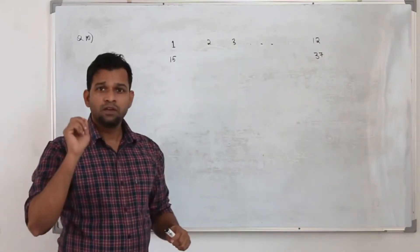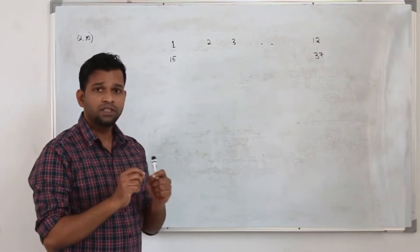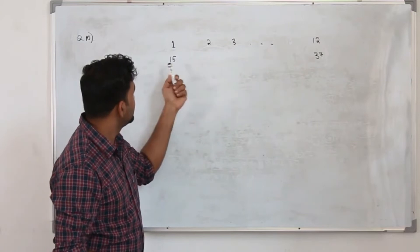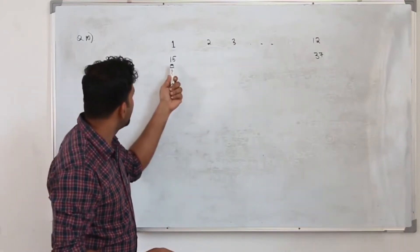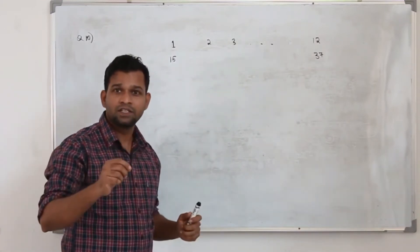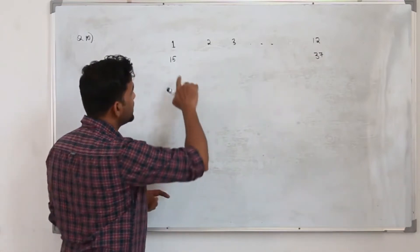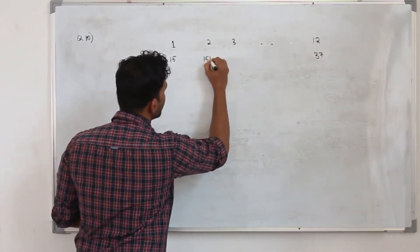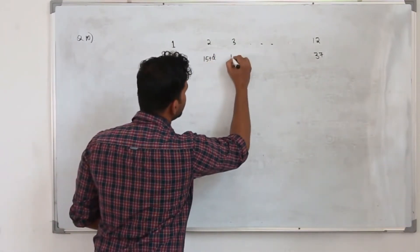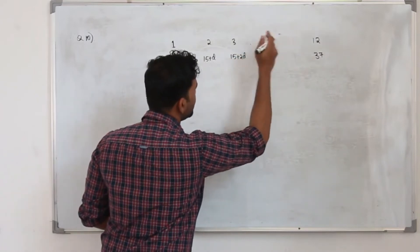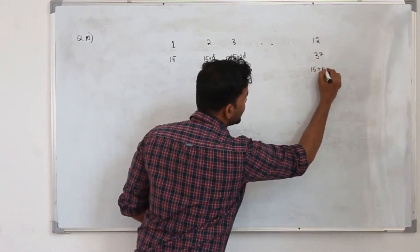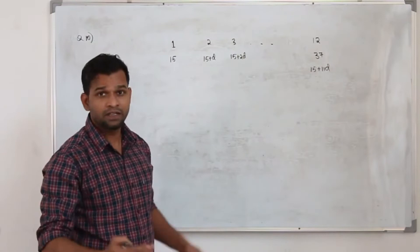Looking at part A, in training plan A every Sunday he increases his distance. In week 1 he runs 15 km, then in week 2 it's 15 plus D km, week 3 is 15 plus 2D, and so on. So in week 12 it will be 15 plus 11D. This is an arithmetic sequence.